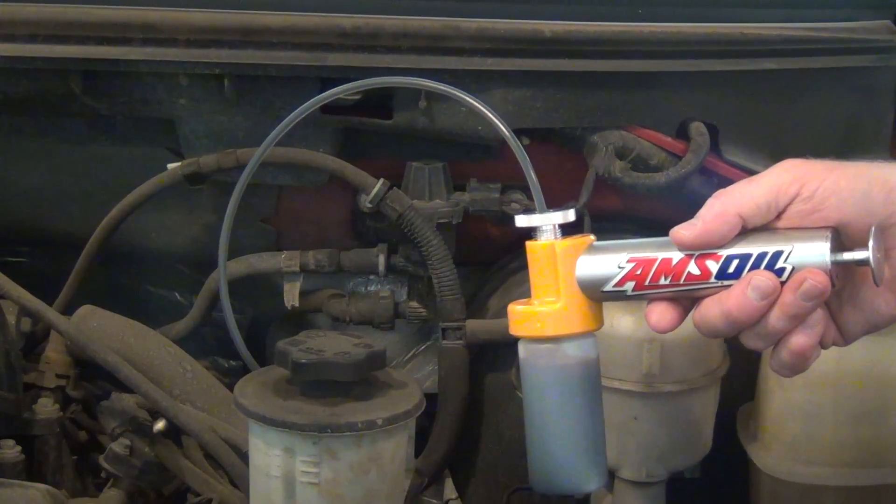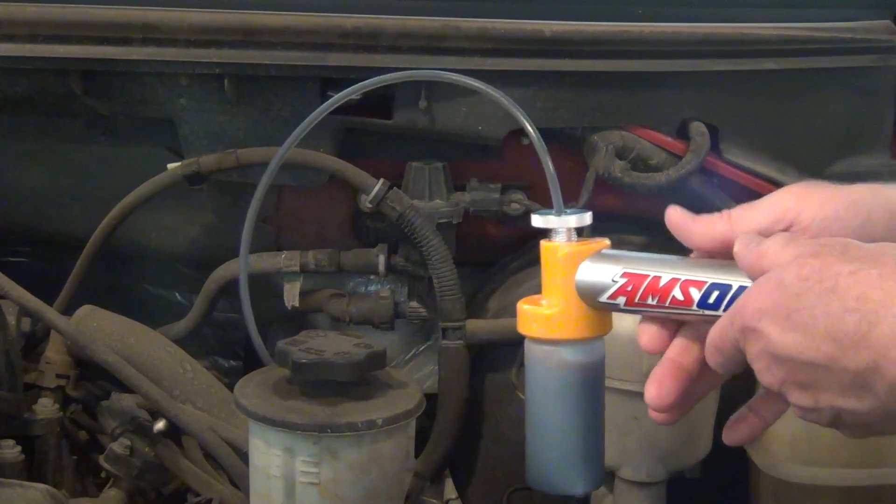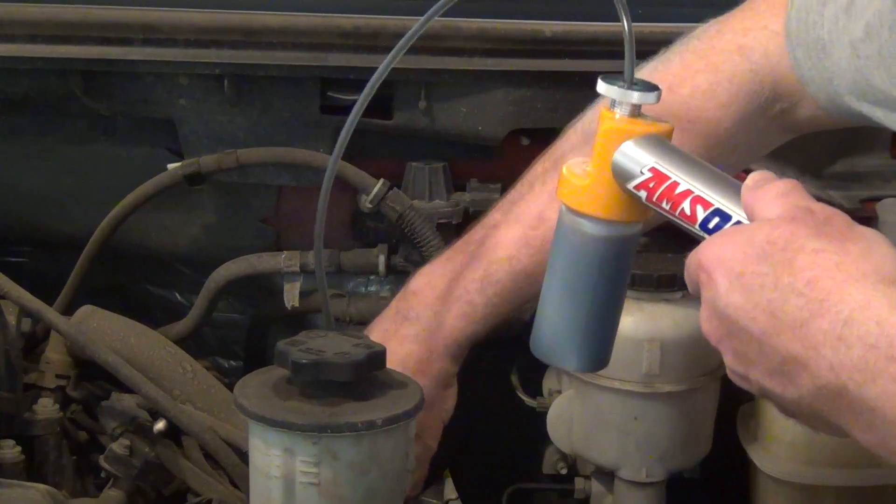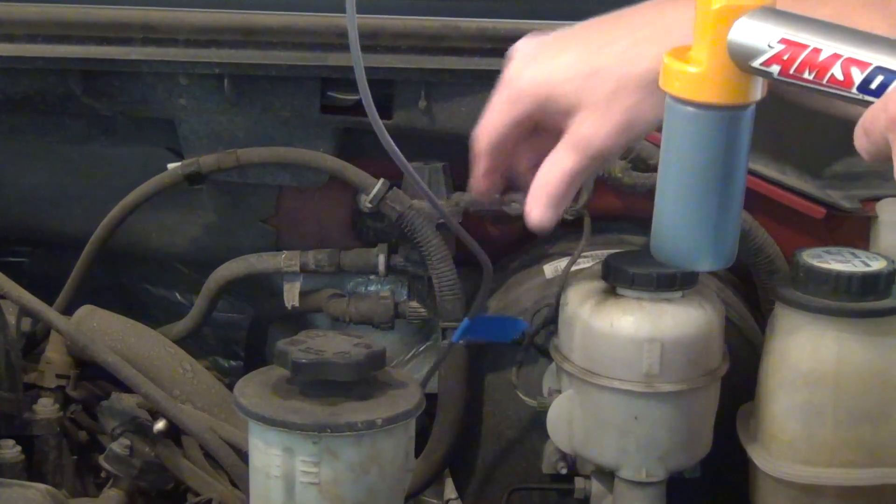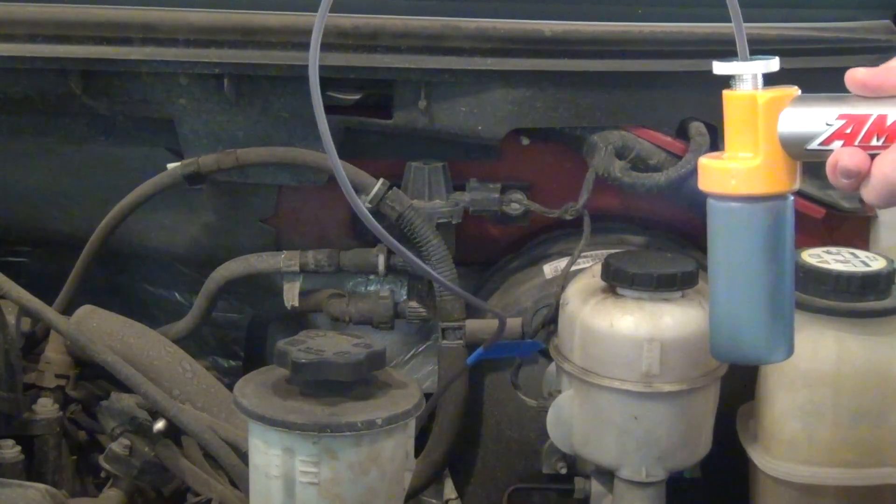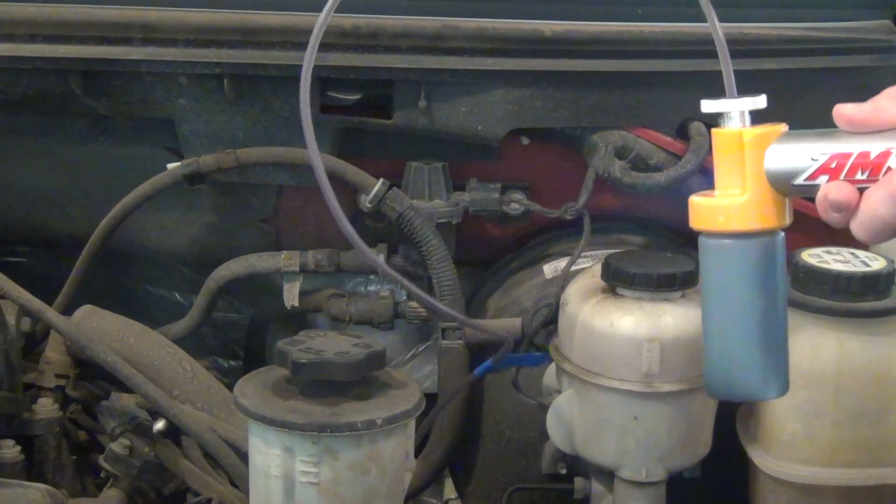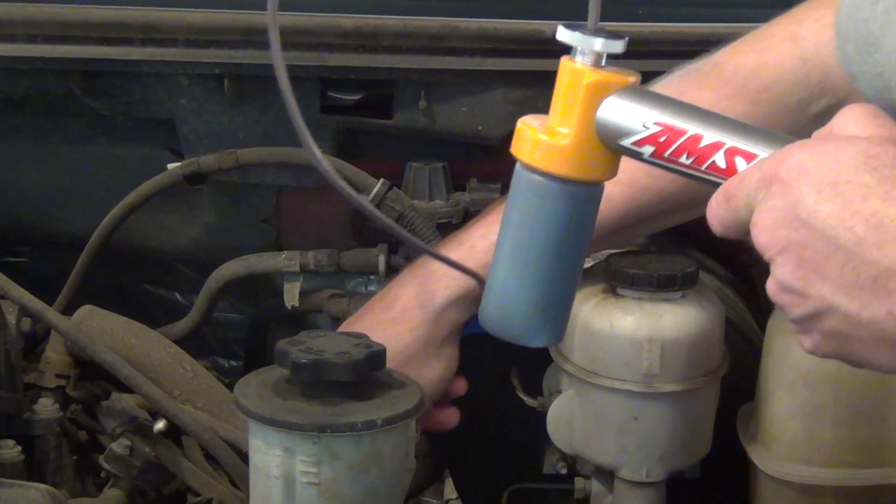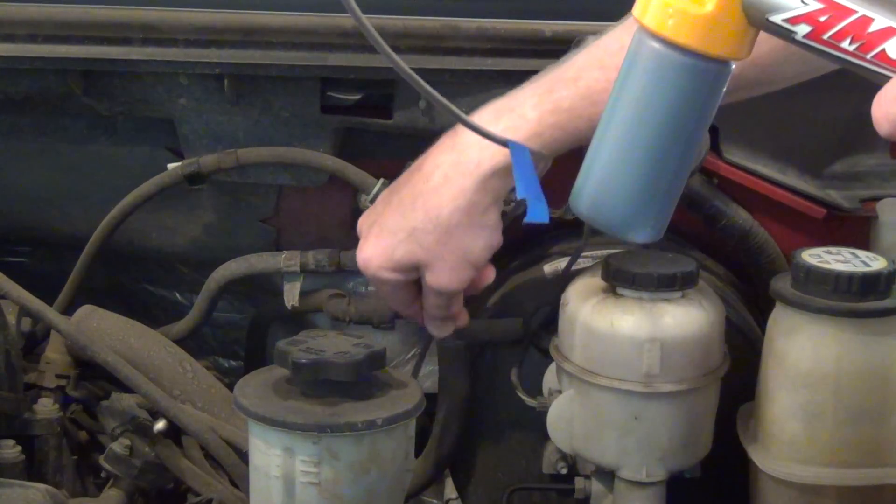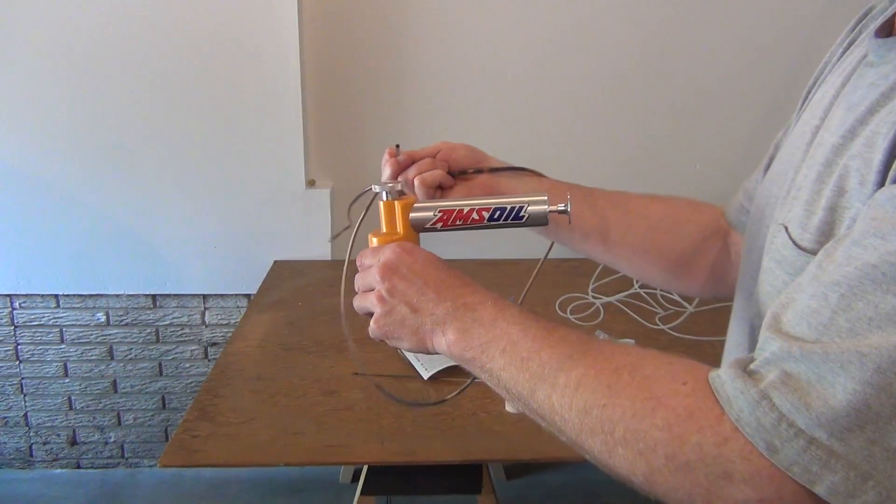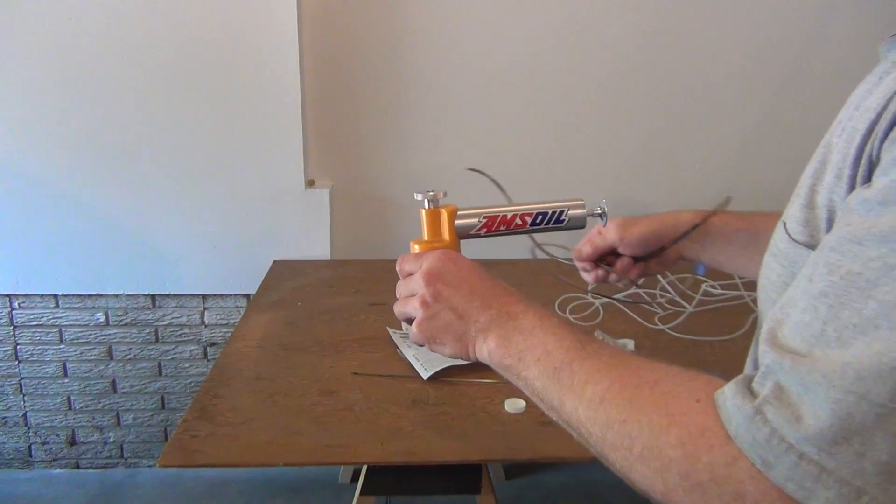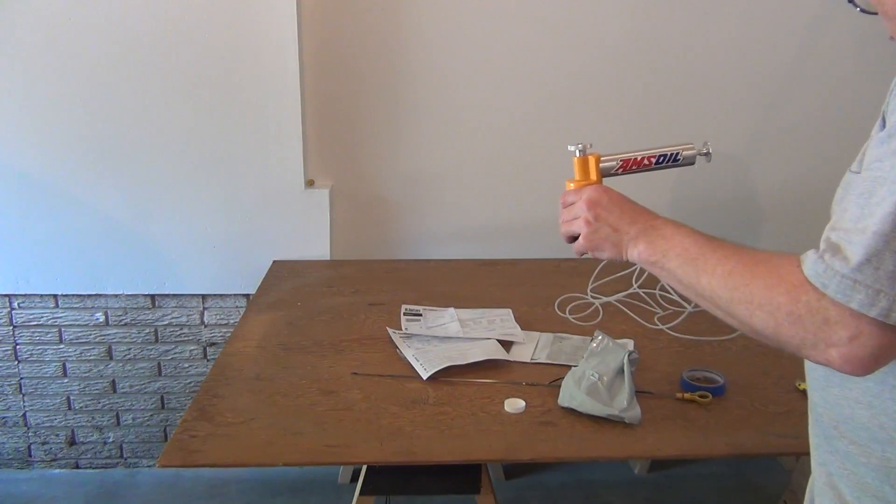When the bottle is almost full, pull the tube up a little bit to empty the tubing of oil. It sounds just like a straw sucking the last drop of a milkshake. The hose has served its purpose and can now be discarded.